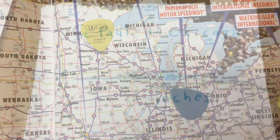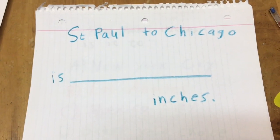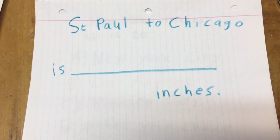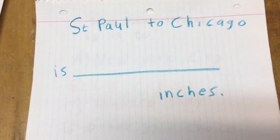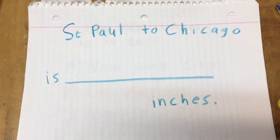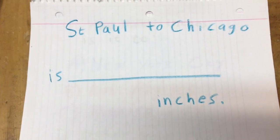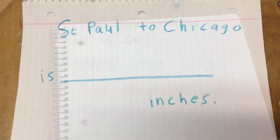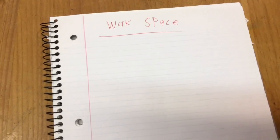Before there were Google maps and cell phones, people would use this road atlas with major highways. What we're trying to figure out is the distance between St. Paul and Chicago, but then we're going to convert it into inches. We're going to use two sheets of paper. This is going to be my presentation page with just my final answer. One will be kind of like a second draft paper, and then have another paper. This is just my workspace scratch paper where I'm going to do all my math on.